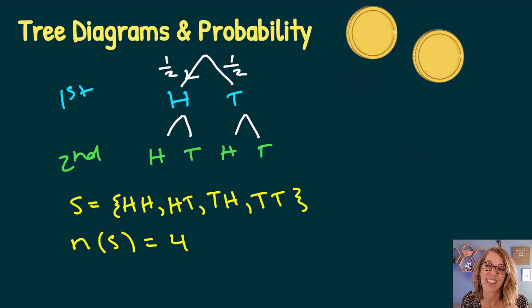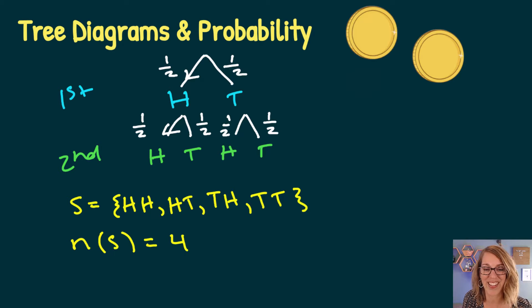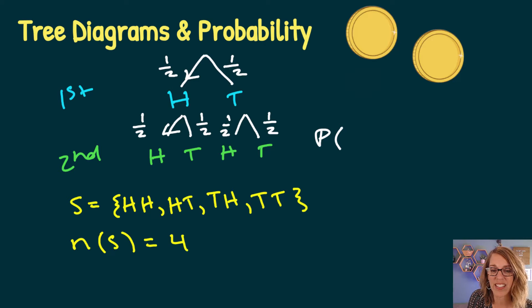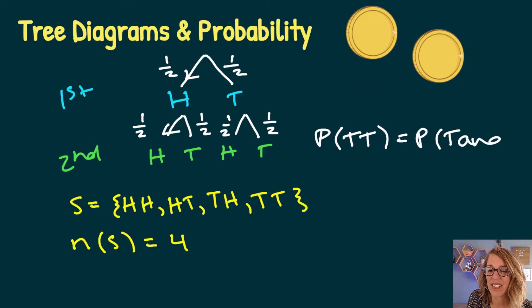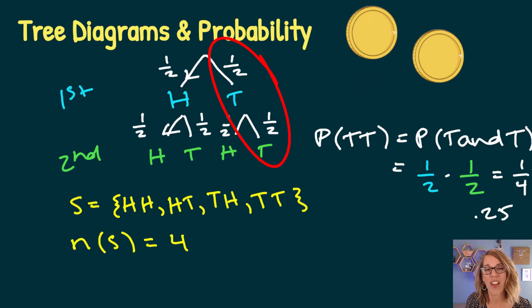Looking at the next branches individually for the second level, getting the second head is another one-out-of-two possibility, and similarly for the second tails — each of those second-level branches is one out of two. So if I want the probability of getting tails followed by tails, that's P(tails and tails), meaning I multiply those probabilities: one-half times one-half equals one out of four, or 0.25 — a 25% probability.